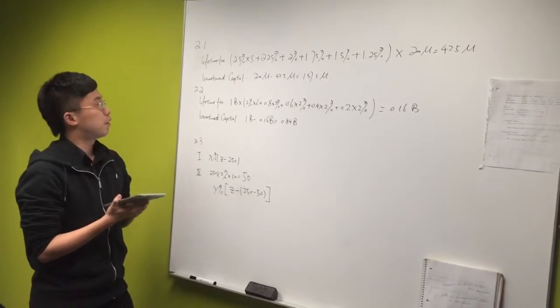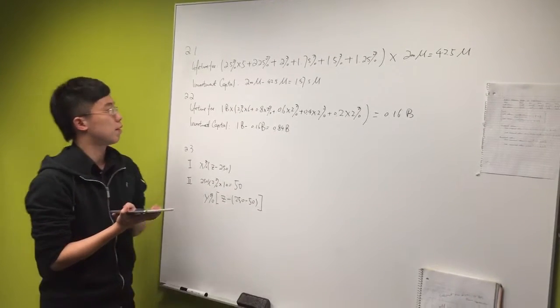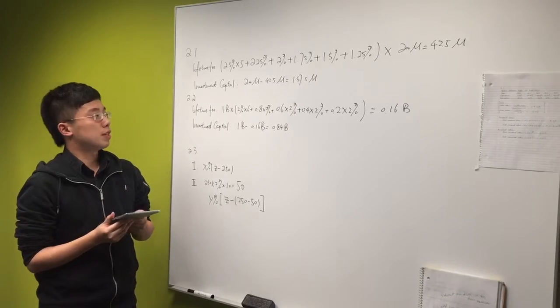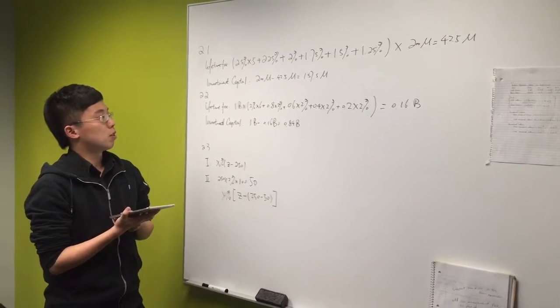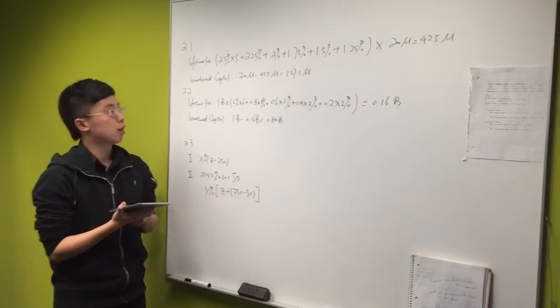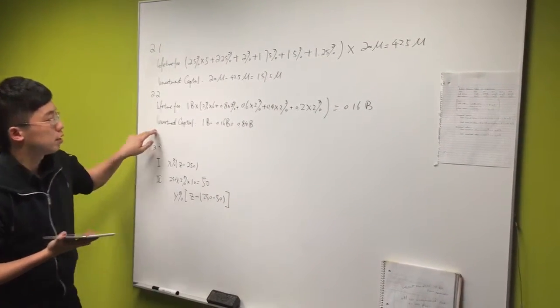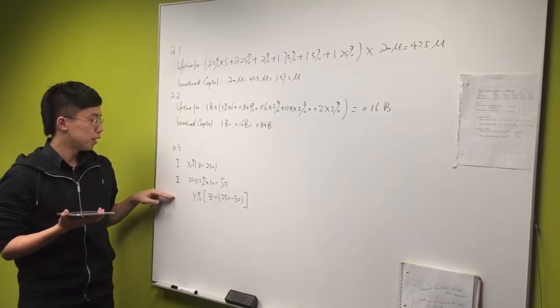Question 2.2. The management fee is paid on the committed capital in the first five years. Then from year 6 to year 10, it realizes 20 percent of investment capital in each year. So the final result is 0.84 billion.